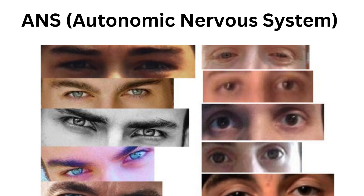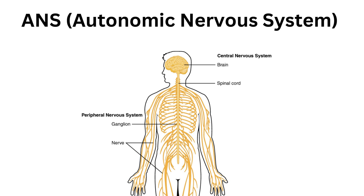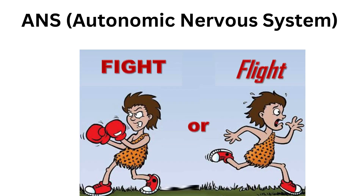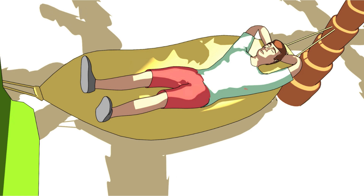The ANS, or in full form the autonomic nervous system, is a part of our nervous system that controls involuntary physiological functions in the body such as heart rate, digestion, respiration rate, and blood pressure. It also controls how your body reacts to stress — often referred to as the fight-or-flight response — preparing the body for stressful or emergency situations by increasing heart rate, dilating airways, and diverting blood to muscles. The second system is the rest-and-digest system, which helps the body relax, recover, and conserve energy by slowing the heart rate, stimulating digestion, and promoting other restorative processes.